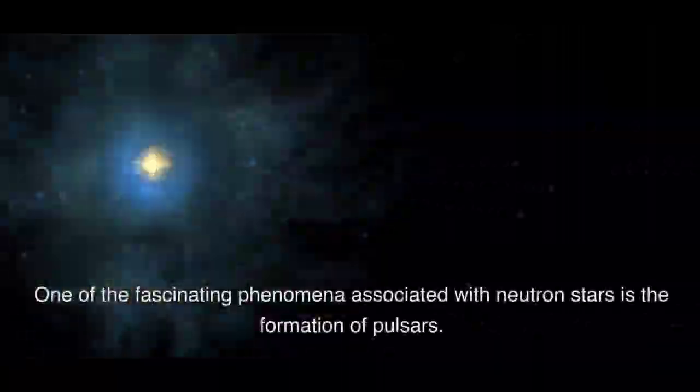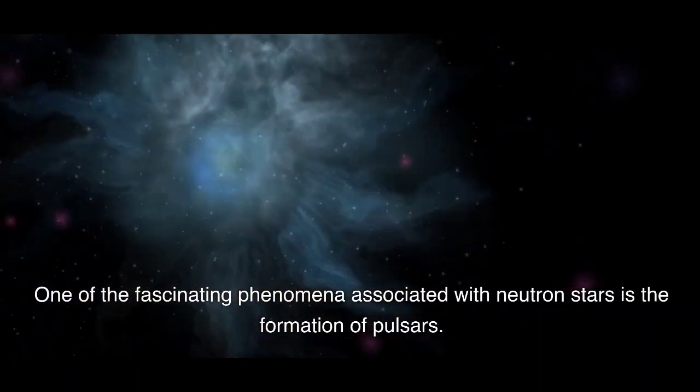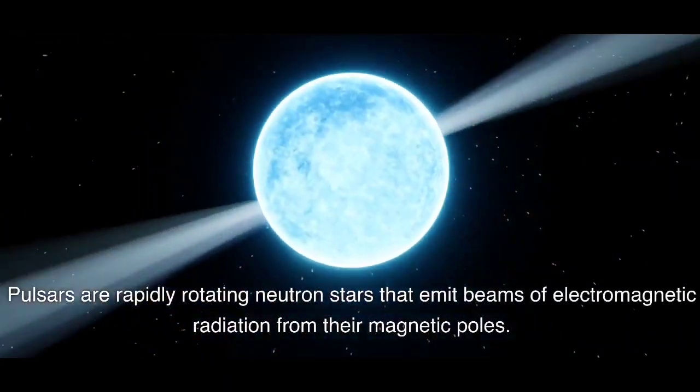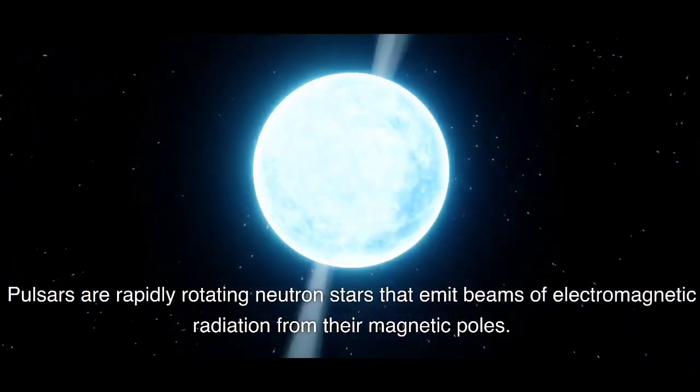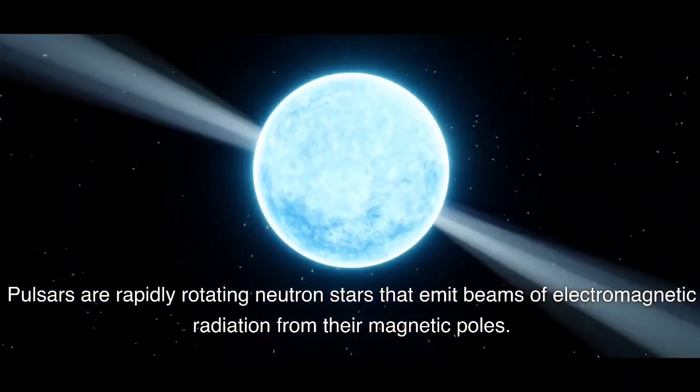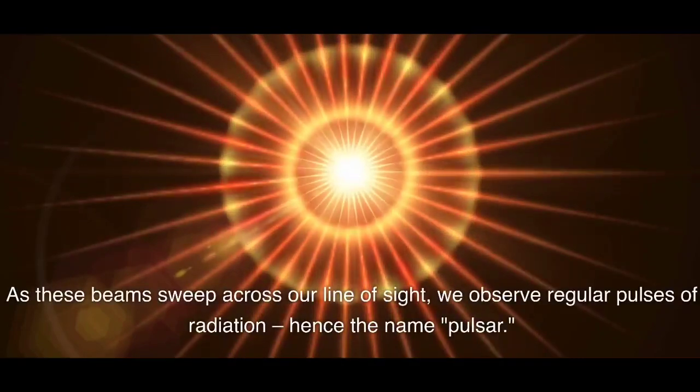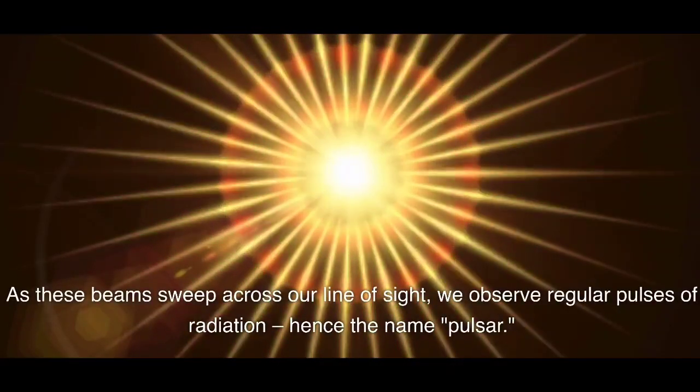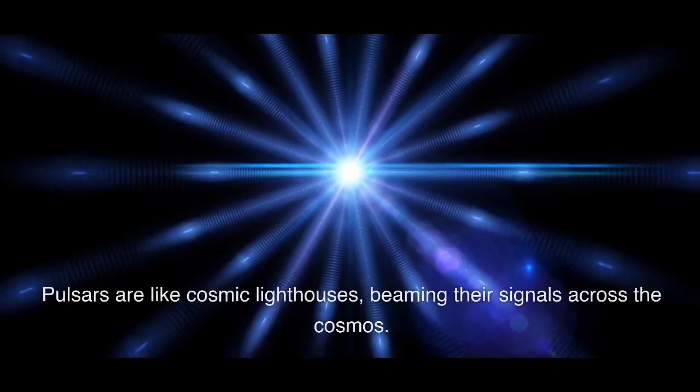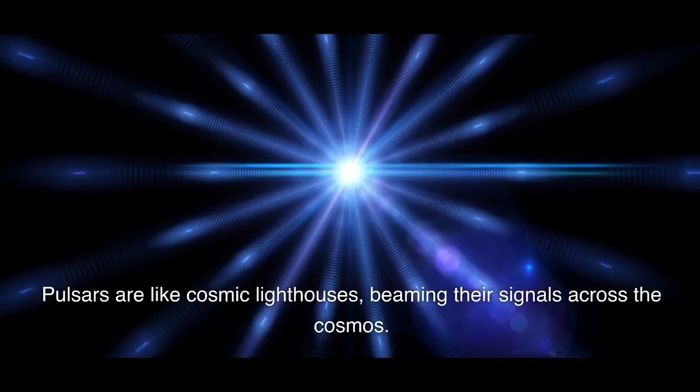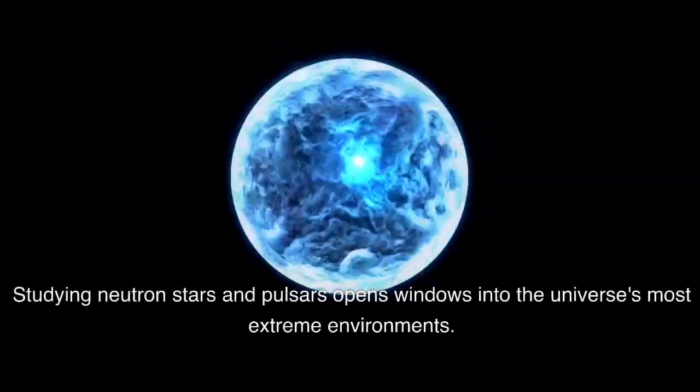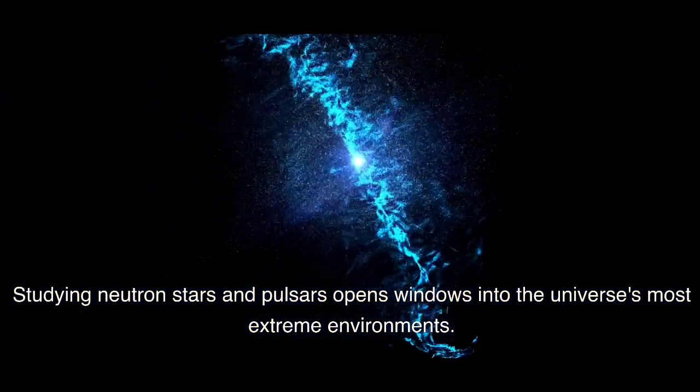One of the fascinating phenomena associated with neutron stars is the formation of pulsars. Pulsars are rapidly rotating neutron stars that emit beams of electromagnetic radiation from their magnetic poles. As these beams sweep across our line of sight, we observe regular pulses of radiation, hence the name pulsar. Pulsars are like cosmic lighthouses, beaming their signals across the cosmos. Studying neutron stars and pulsars opens windows into the universe's most extreme environments.